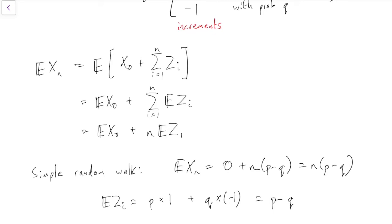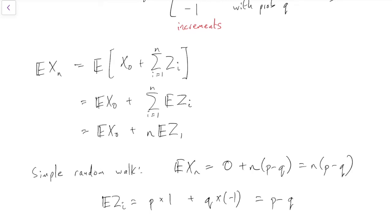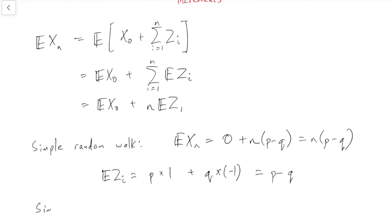That's the expectation of a simple random walk. Note that the expectation gets bigger in absolute value as n gets bigger, unless p equals q equals 1 half. In fact, let's note that specifically for the simple symmetric random walk, which remember is the case where p equals q equals 1 half. The expected value of Xn equals 0. So that means it stays the same on average in the symmetric case, or the other case is it gets further away from 0 on average as n gets bigger.